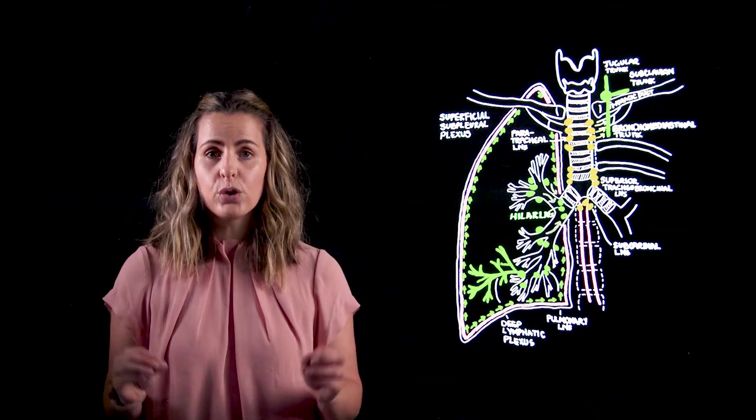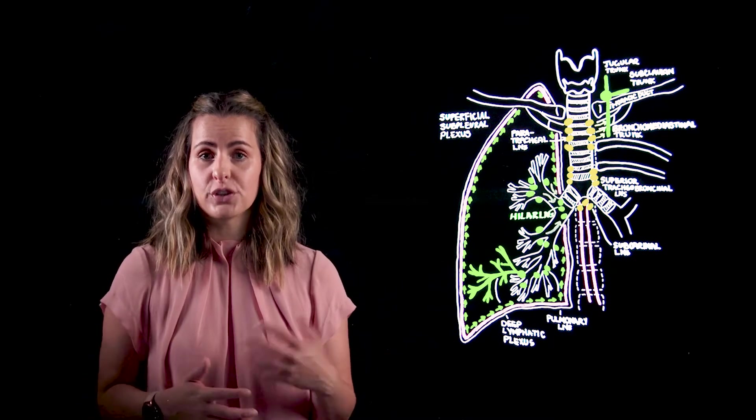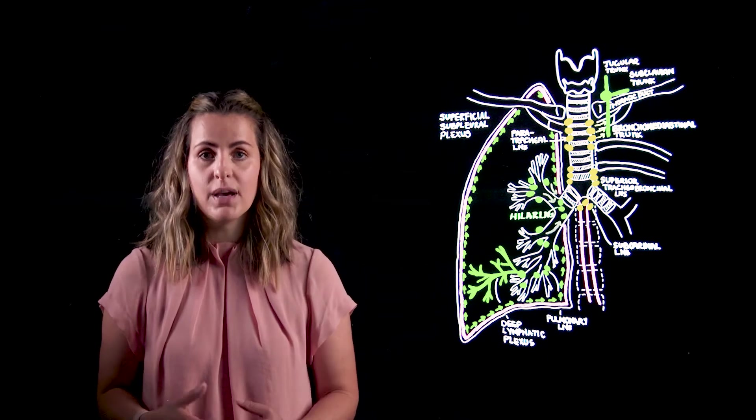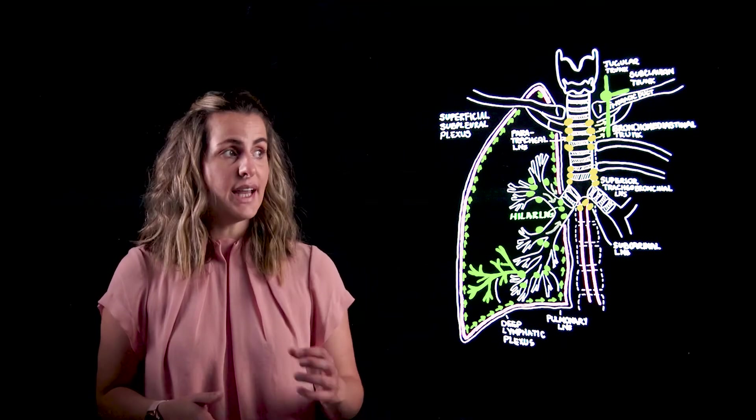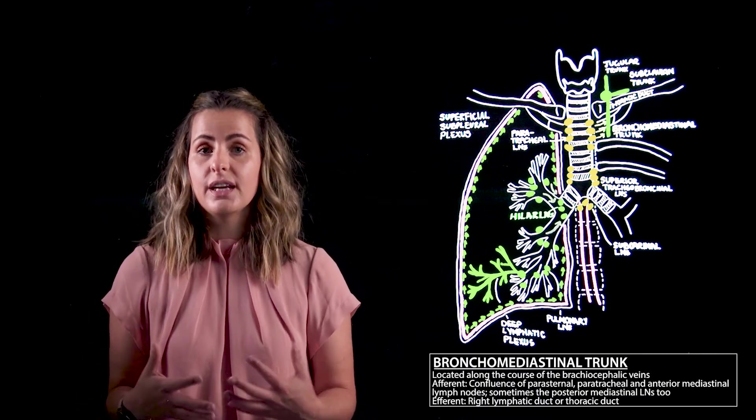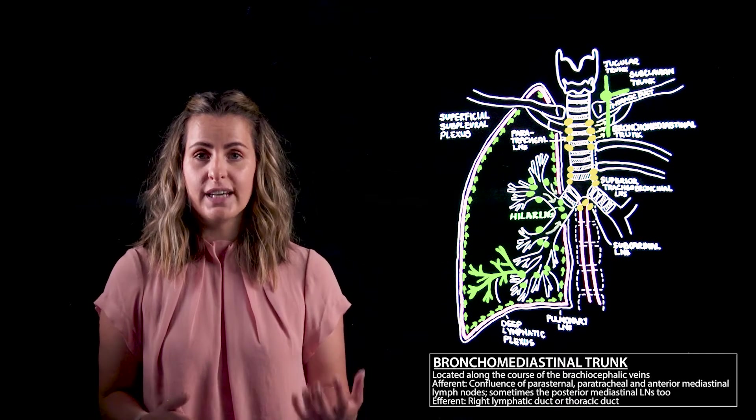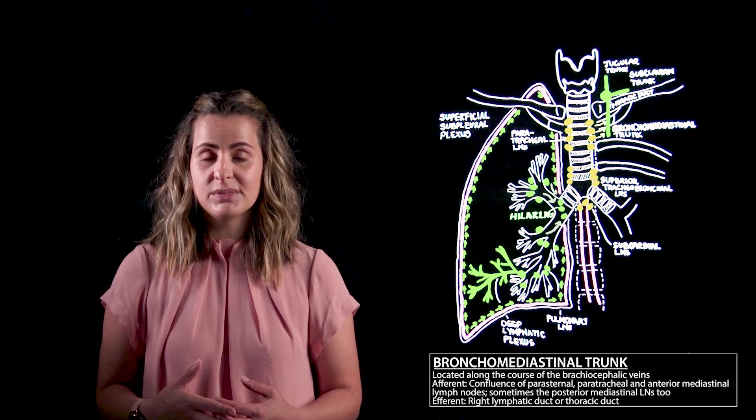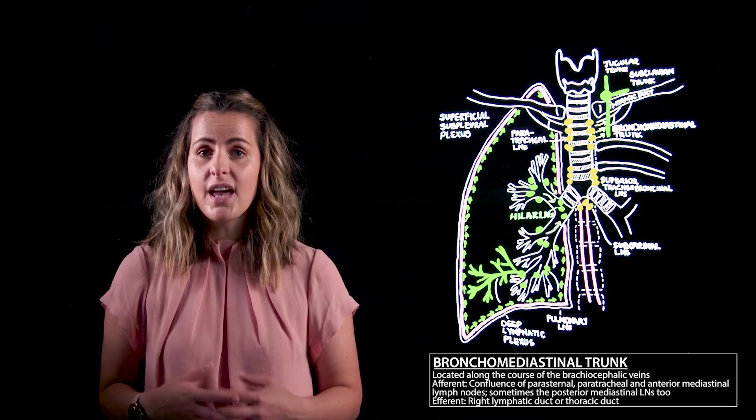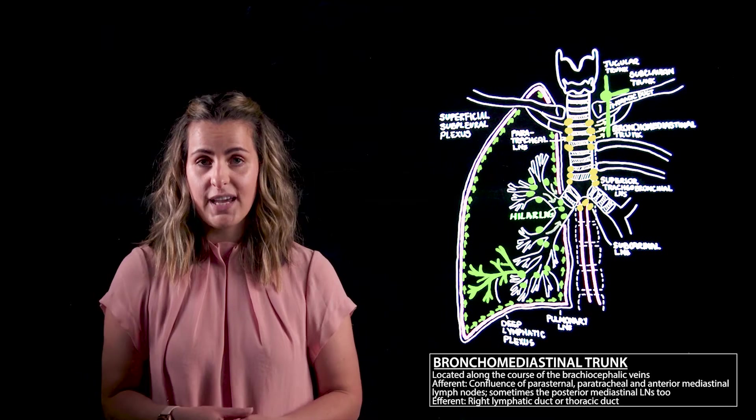Therefore ultimately all of the lymph drained from the thoracic wall and viscera including the trachea, the heart, the mediastinum, as well as medial parts of the mammary glands will end up at the bronchomediastinal trunk. This trunk will then eventually drain into the right lymphatic duct or the thoracic duct on the left at a point where they empty into the brachiocephalic vein at the angle or junction formed between the internal jugular vein and the subclavian veins.